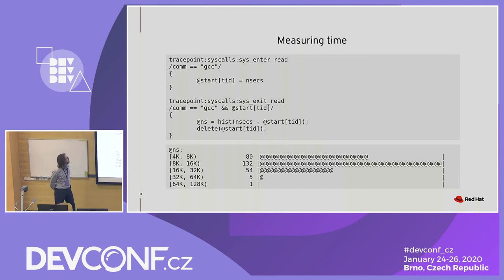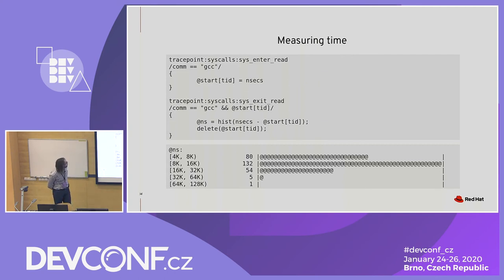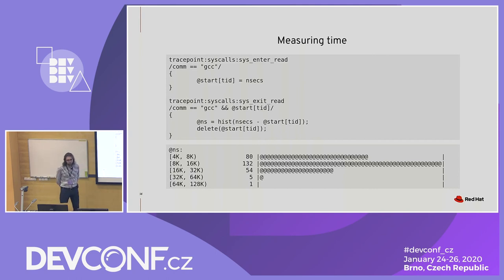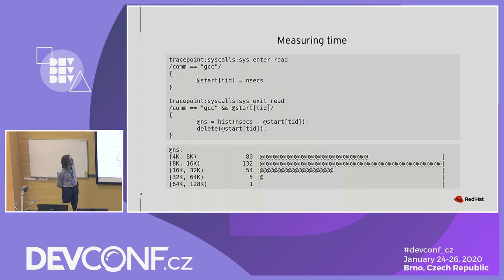Something that's also pretty useful — we do a lot with BPF trace: measuring time, measuring delay, stuff like that. For example, let's say you want to see how much time the reads take in GCC. What we're going to do is take a snapshot of a timestamp and put it in a per-TID variable. We do that on the syscall enter. And when it exits, we just make the difference between the current time and the snapshot we made earlier.